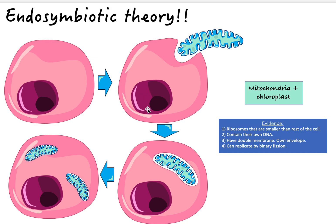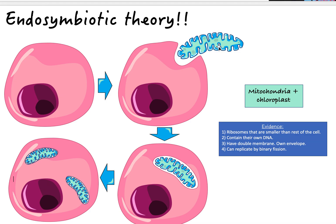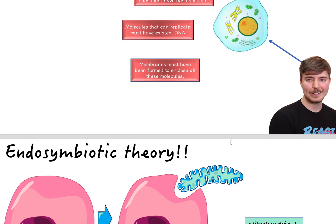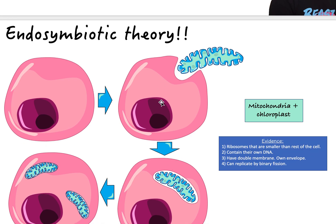The second piece of evidence is that mitochondria and chloroplasts have their own DNA, separate from the nucleus. This also suggests they were once able to live independently, since they need DNA to replicate and survive. The third piece of evidence is that these organelles have a double membrane — their own original membrane plus the membrane formed when they were taken up by the larger cell — unlike most other organelles.